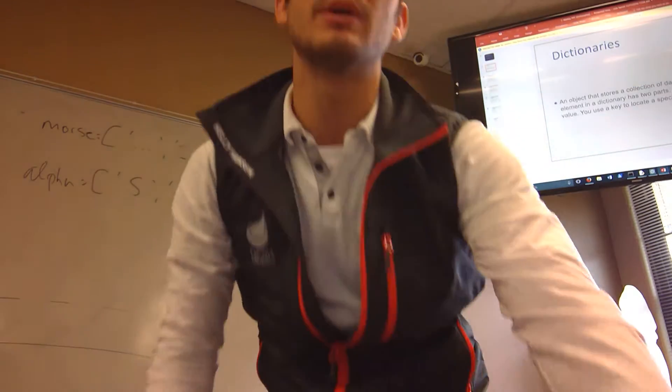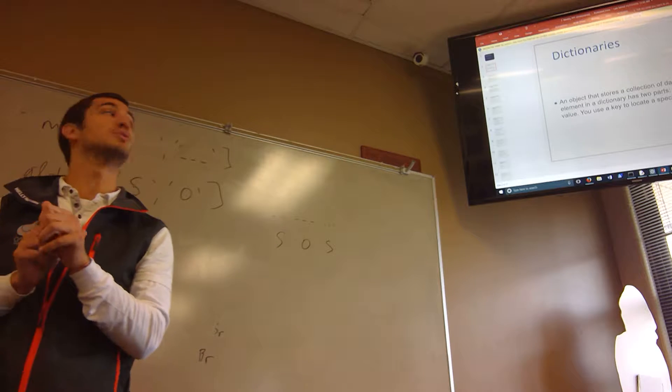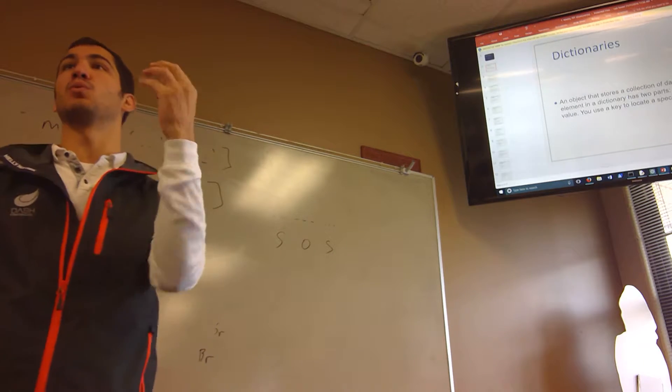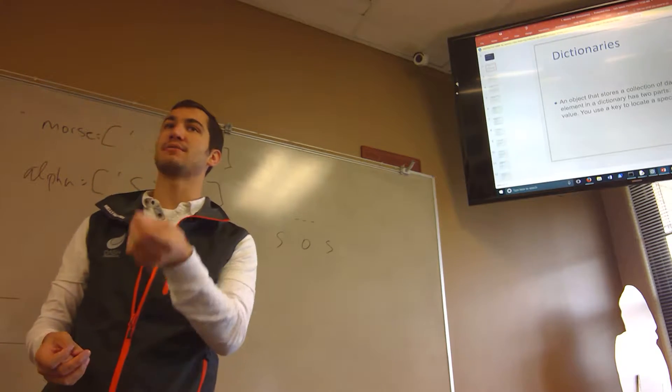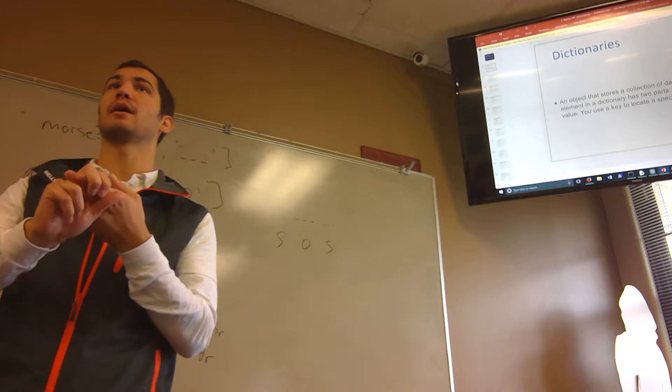Okay, so a dictionary. Every element in a dictionary has two parts: it has a key and a value, much like in an actual dictionary you have the word and the definition. I can't find the definition unless I know the word. They're a pair, and you can't have one without the other. Does that make sense?